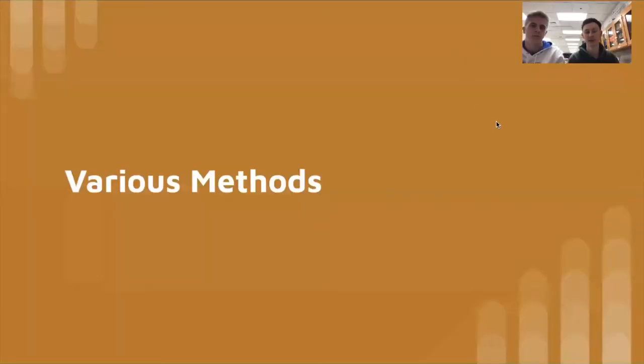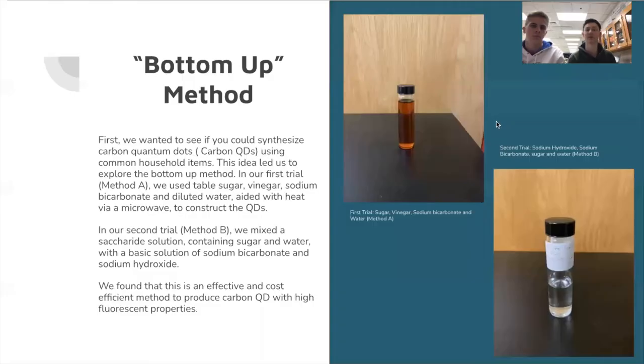We had various different methods for making quantum dots. The first one was a bottom-up method, and in this method we would build up the quantum dots using a carbon source. We used sugar and we wanted to use household items for our first one. So we used sugar, vinegar, and sodium bicarbonate to make our first trial, which is method A, and for our second one we added sodium hydroxide and we got a more clear solution, both of which are bottom-up quantum dots.